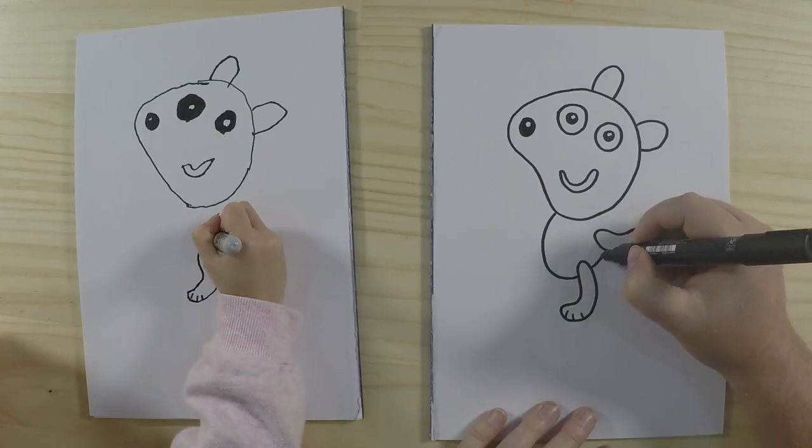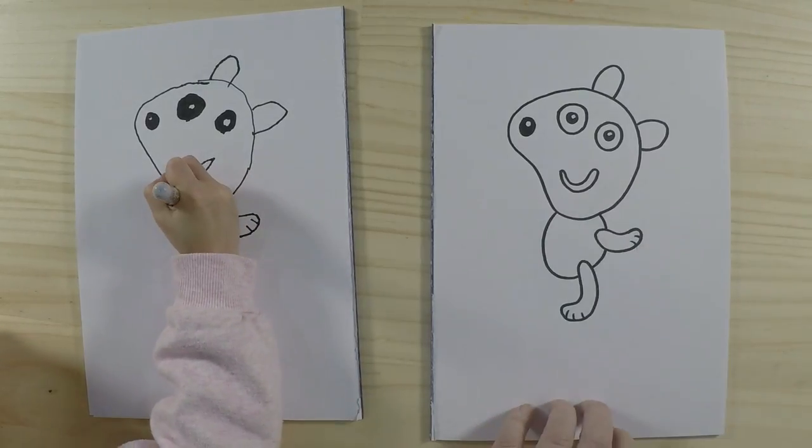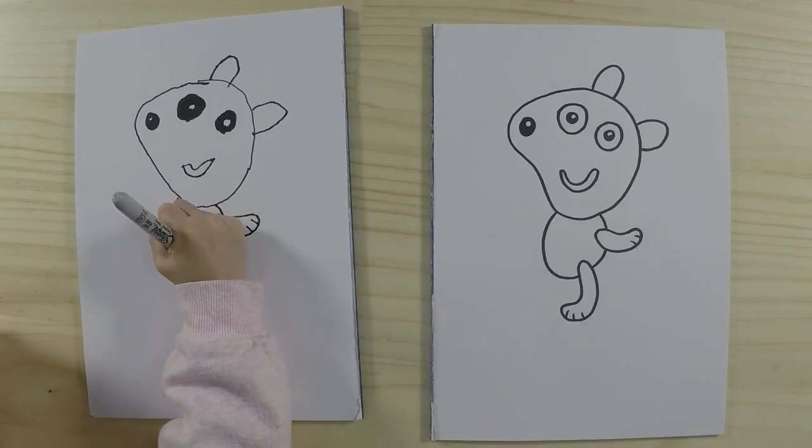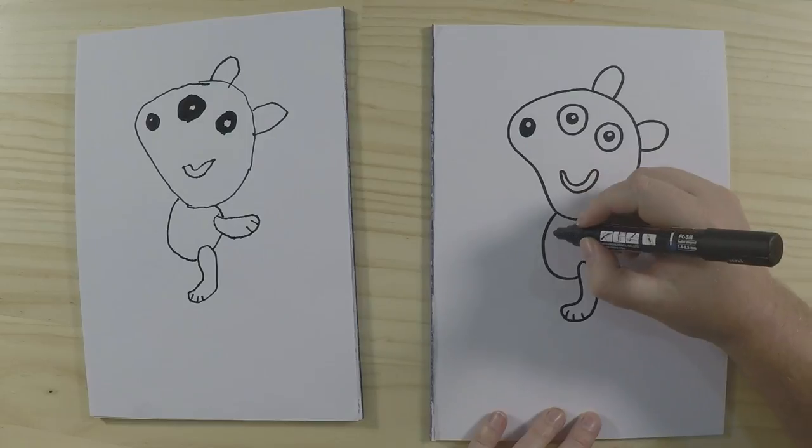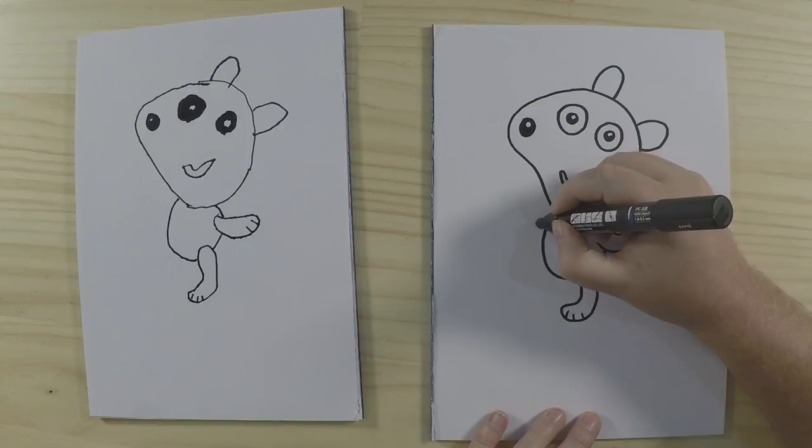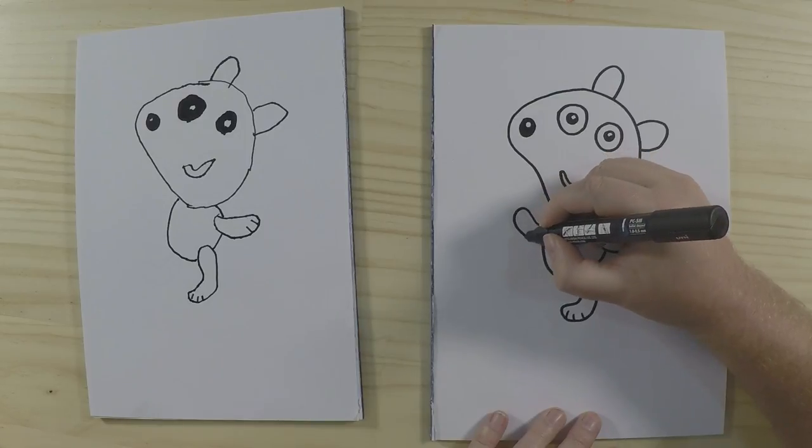So we draw that on top first. Continue that around like that. And then we can draw the other arm and some of the arm is going to be behind the body so we don't draw that, but we draw it like this. And again you can add a few lines on there for his paws.